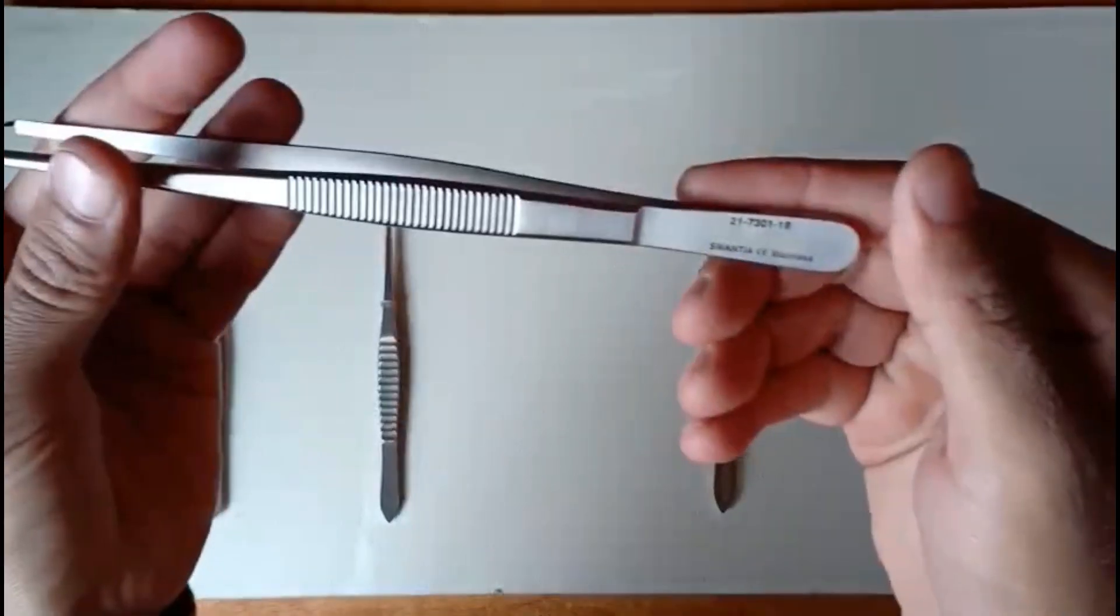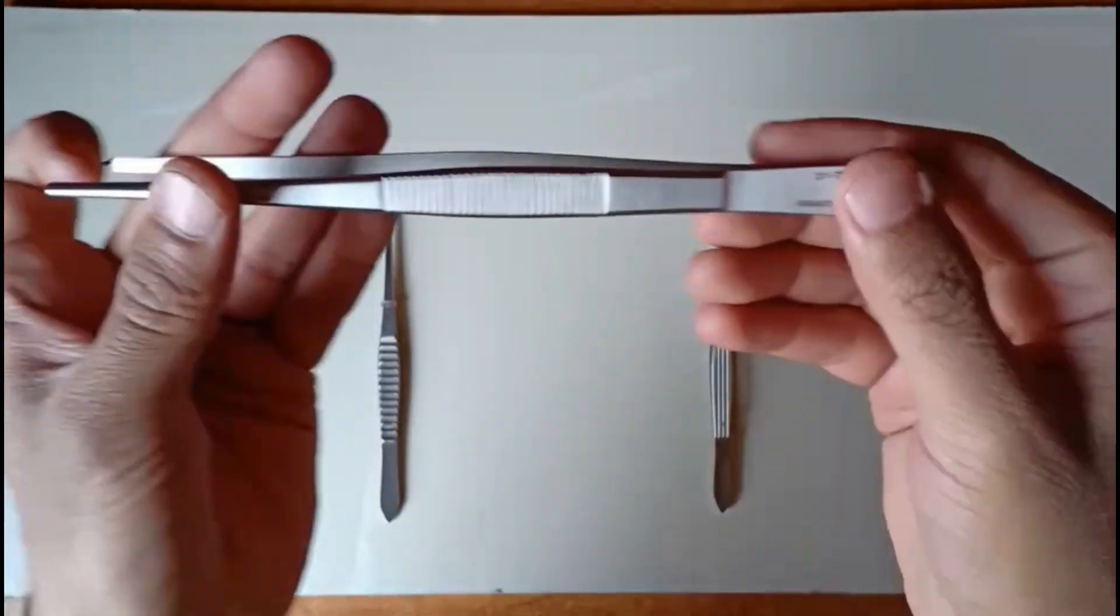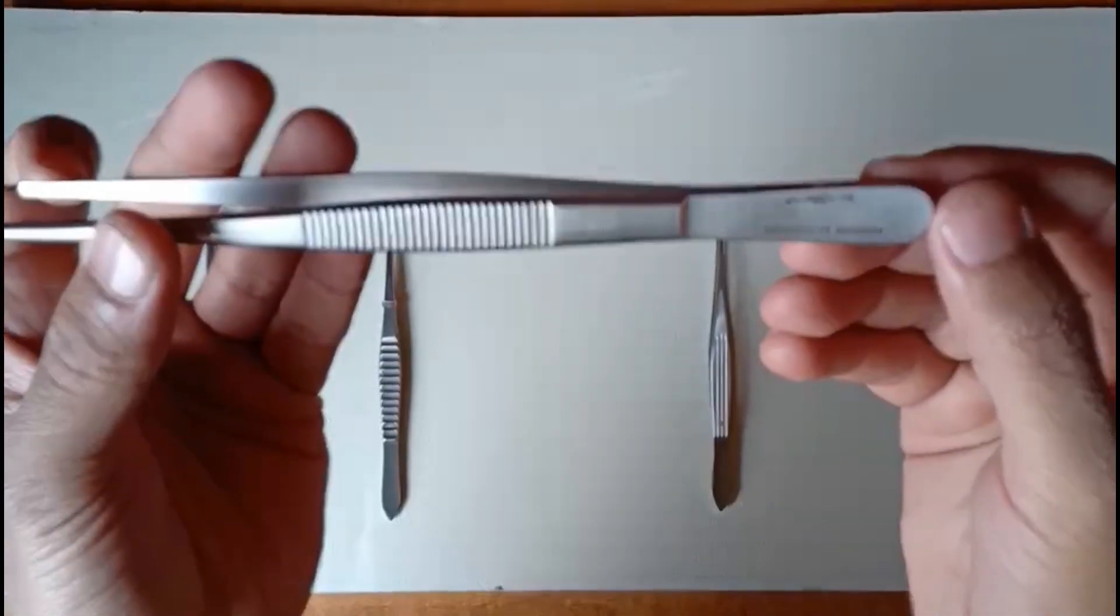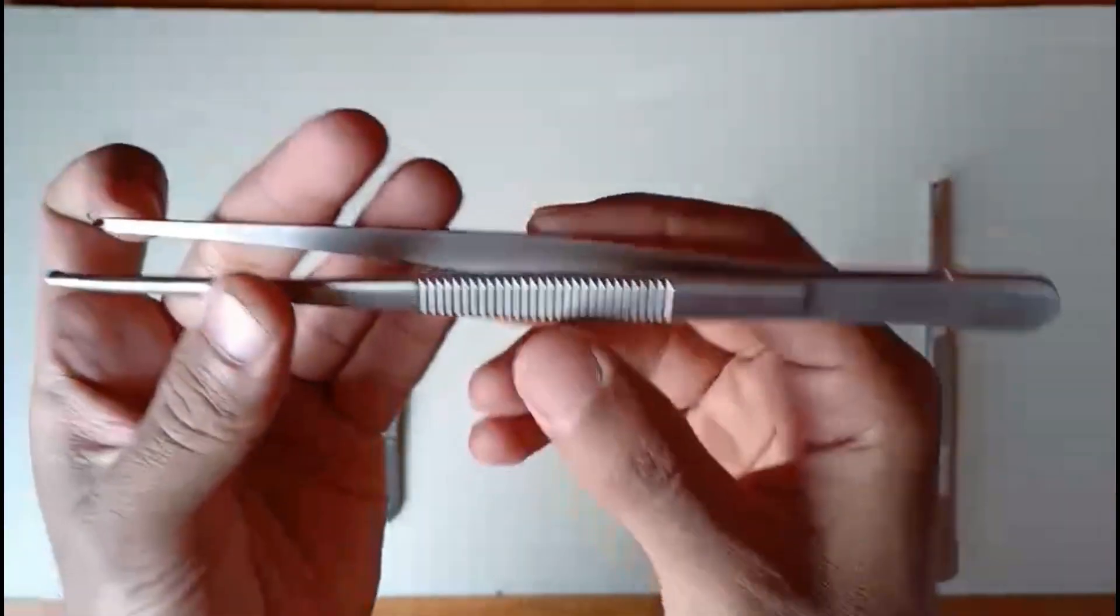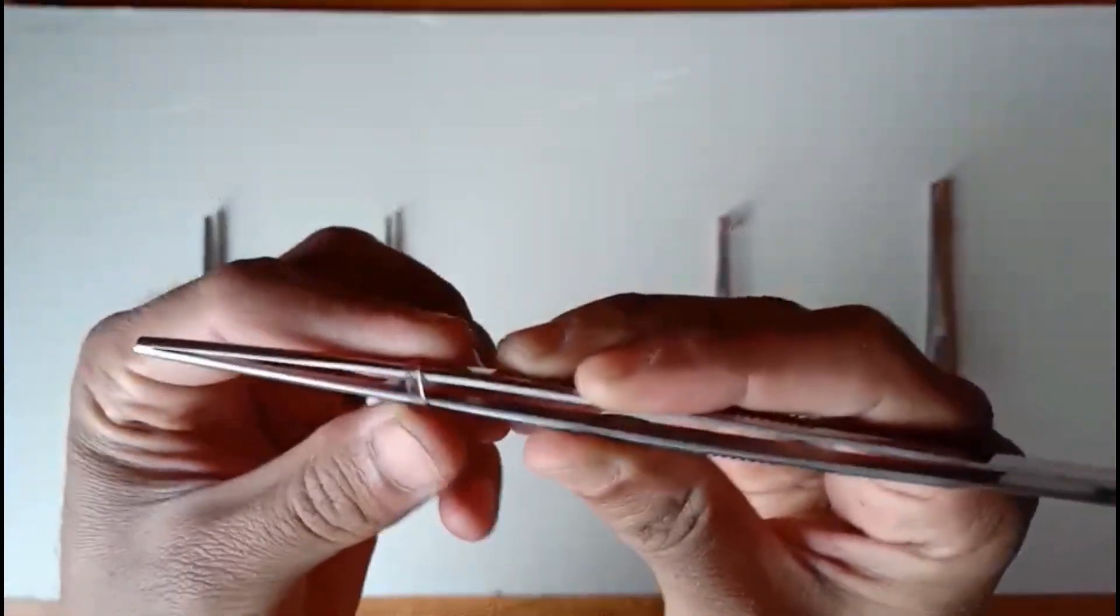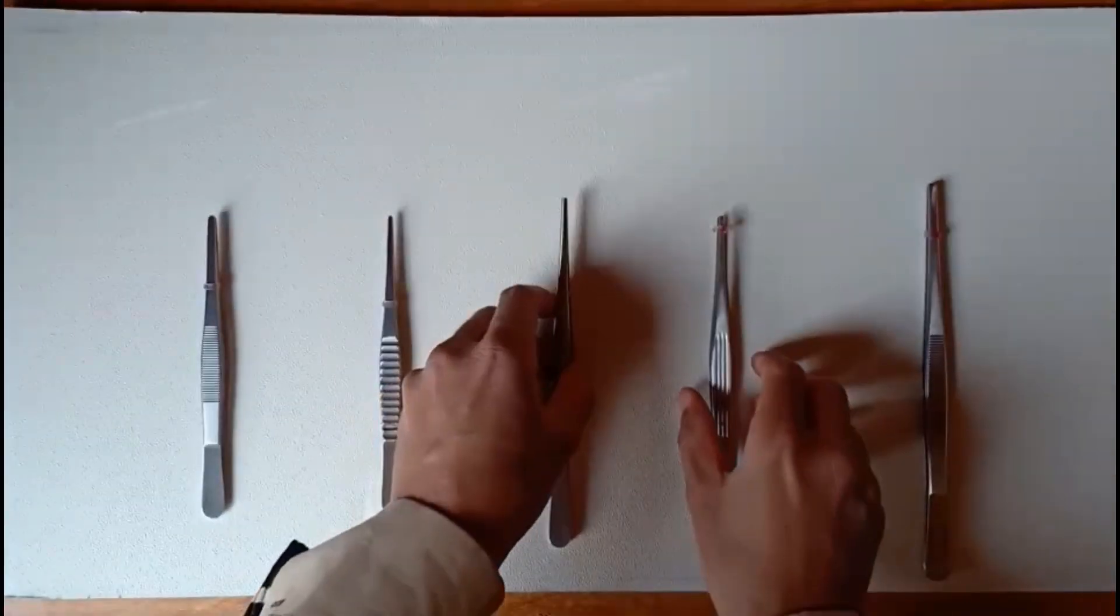This jaw-type forceps has catalog number 217301-18. Other sizes are also available on the website.